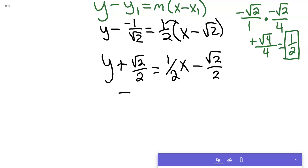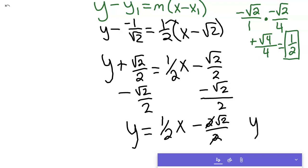Then you would subtract this root 2 over 2. Subtract root 2 over 2. And you're left with the function in slope-intercept form. Y equals 1 half x minus 2 root 2 over 2s. These cancel out. And finally, we're there. 1 half x minus root 2. So, there's my equation of our tangent line.